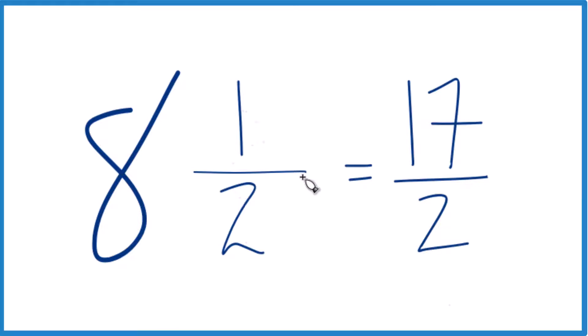The mixed number 8 and 1 half, it equals 17 halves. Let's do it again. 8 times 2 is 16. 16 plus 1, that's 17. That's our numerator here. Bring the 2 across, and we're done.